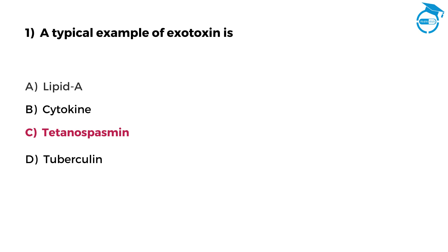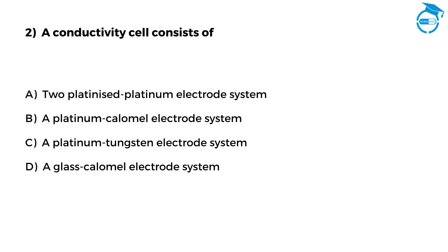Now let us quickly move to question number 2. A conductivity cell consists of. Option A, Platinized Platinum Electrode System. Option B, A Platinum Calomel Electrode System. Option C, A Platinum Tungsten Electrode System. Option D, A Glass Calomel Electrode System. You have got 7 seconds — if you know the answer, mention it in the comments.